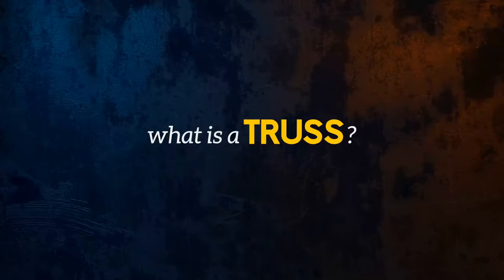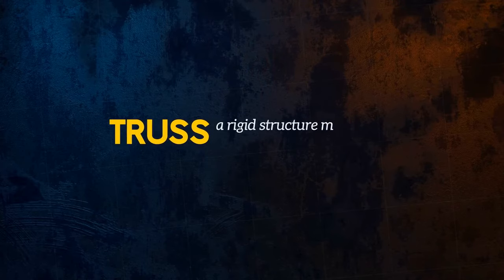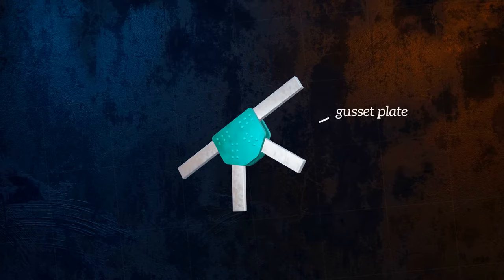So what exactly is a truss? It is essentially a rigid structure made up of a collection of straight members. The members of a truss are often rigidly connected using what is known as a gusset plate.